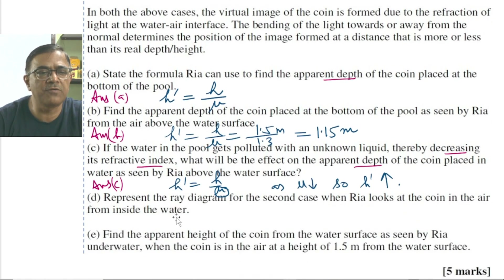Let's check part D of the problem. In part D of the problem, situation is reversed. Now the coin is held in air and Rhea looks at the coin while being inside the water. And we are supposed to draw the ray diagram for this case. The ray diagram, let's try it.